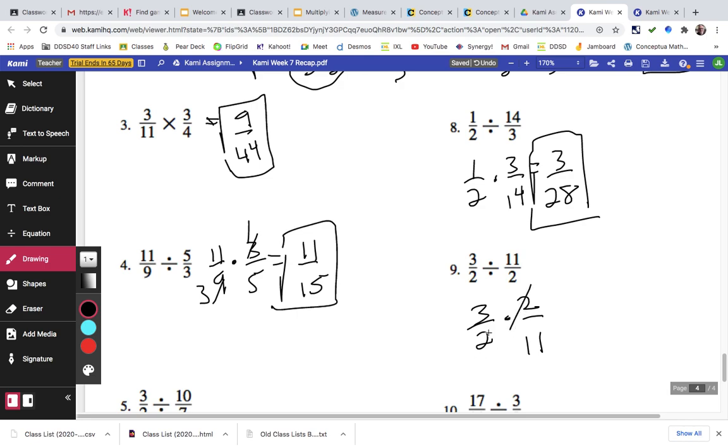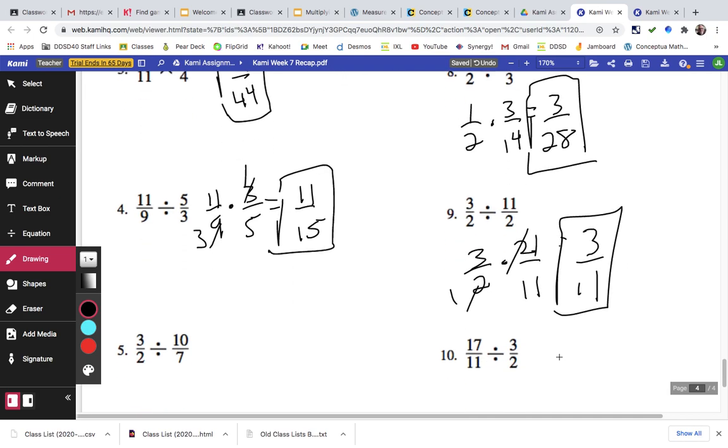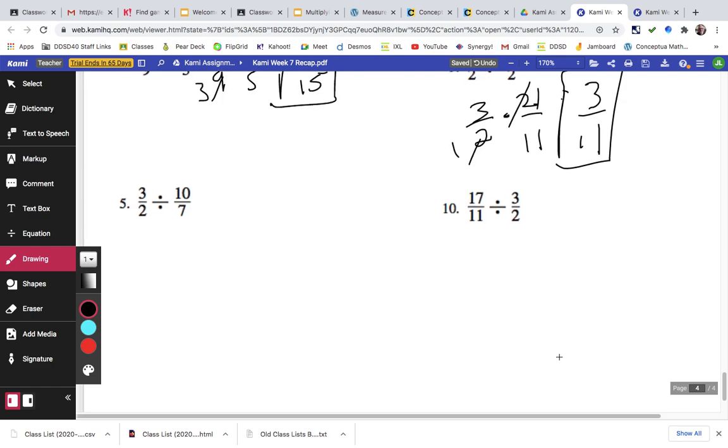This is 3/2 times 2/11. Those 2s pre-cancel out, so that's 3/11. This is 3/2 times 7/10 and looks like we don't have any shared factors, so it's just 21.